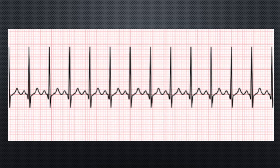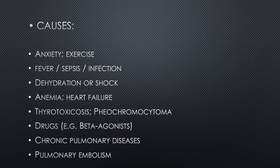The P waves are always normal, and the PR interval is always normal — that is less than 0.2 seconds — and QRS width is normal. The causes include anxiety, exercise, fever, sepsis, infection, dehydration, and shock, all of which can lead to sinus tachycardia.